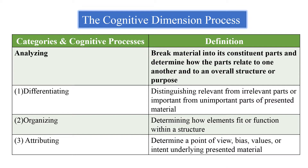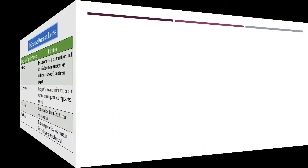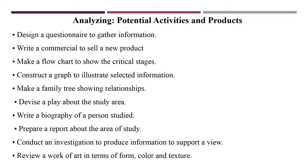Analyzing can be defined as breaking material into its constituent parts and determining how the parts relate to one another and to an overall structure or purpose. It can be divided into differentiating, organizing, and attributing. These are the examples of potential activities and products in the analyzing cognitive dimension process.